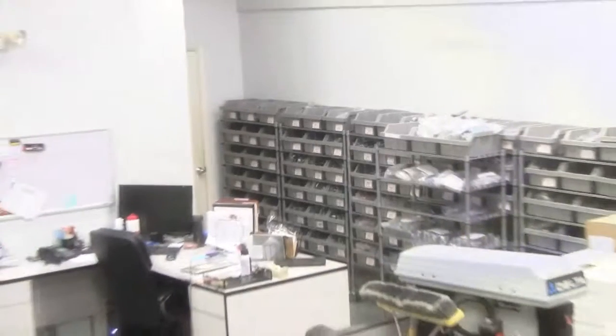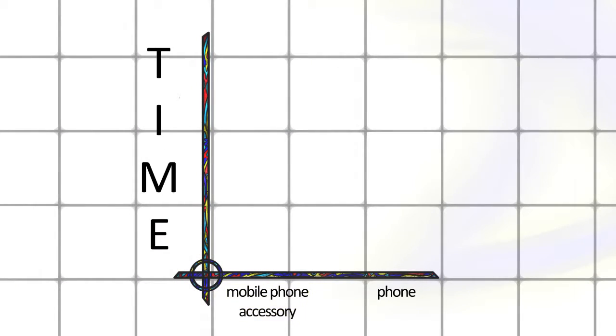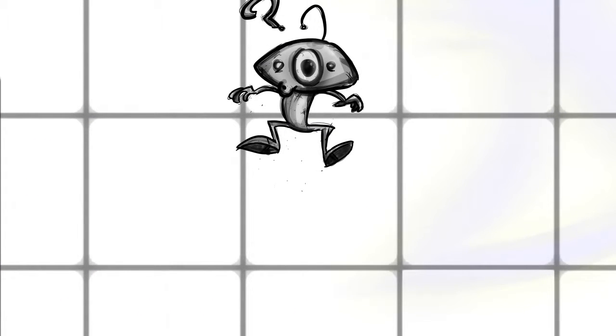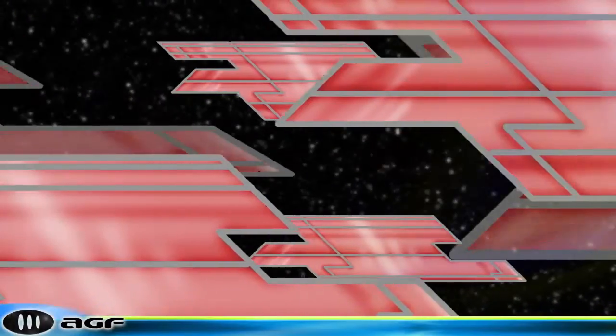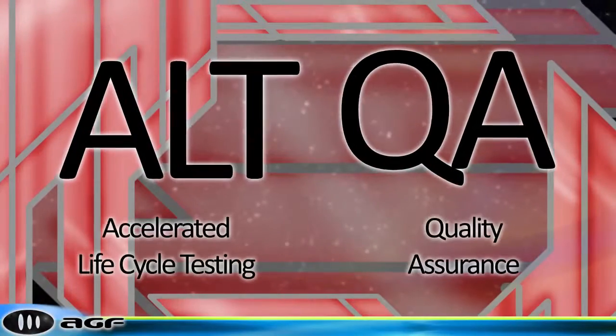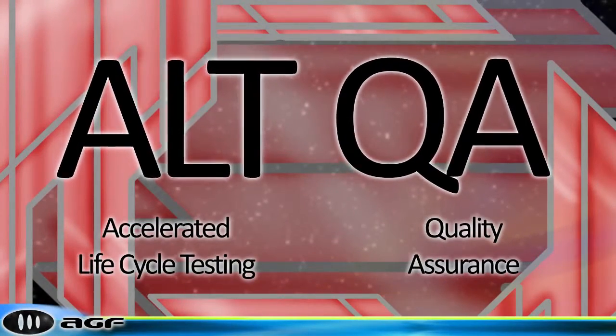It is our opinion that a mobile accessory should outlast the device it's made for. While most people agree, not everybody lives up to that expectation. Well, here at AGF, we pride ourselves on the durability of our products, which is why every one of our products goes through two basic types of tests: accelerated lifecycle testing and quality assurance.